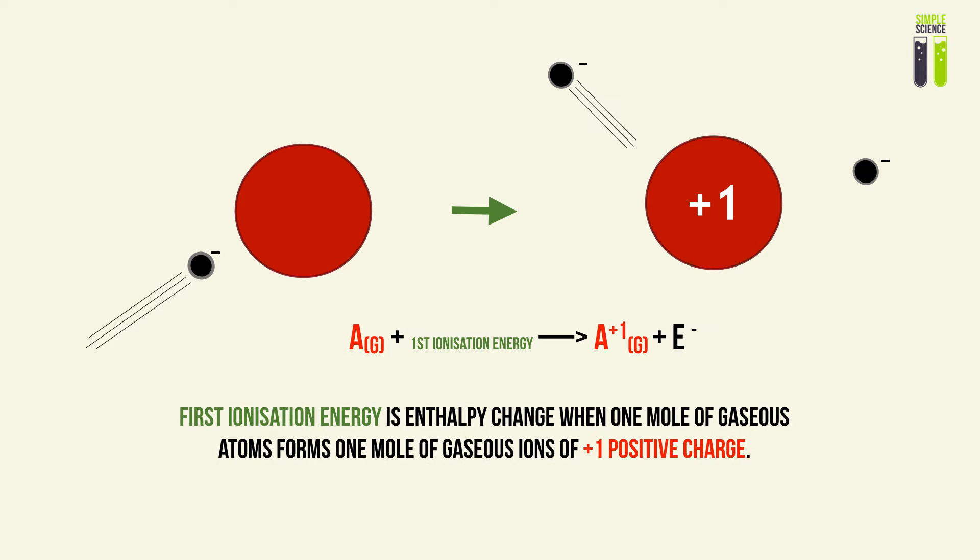We usually deal with the first ionization energy. The first ionization energy refers to the first step to form a plus-one ion — specifically, the enthalpy change when one mole of gaseous atoms forms one mole of gaseous ions of plus-one charge. Because it is the first step into an ion, we call it the first ionization energy.